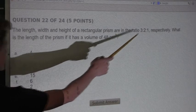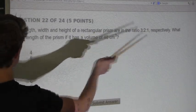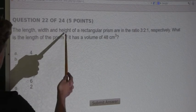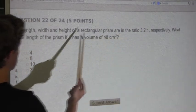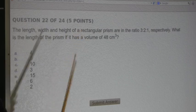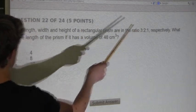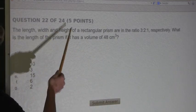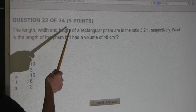So let's look at the ratio 3 to 2 to 1. That means the length is 3, the width is 2, and the height is 1. So we would take the height as a. Therefore, the length would be 3a, the width would be 2a, and the height would be a.